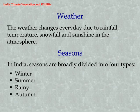Seasons. In India, seasons are broadly divided into four types: Winter, Summer, Rainy, and Autumn.